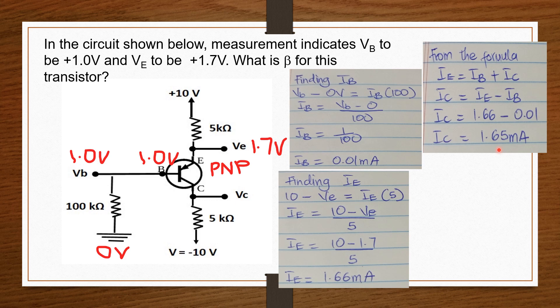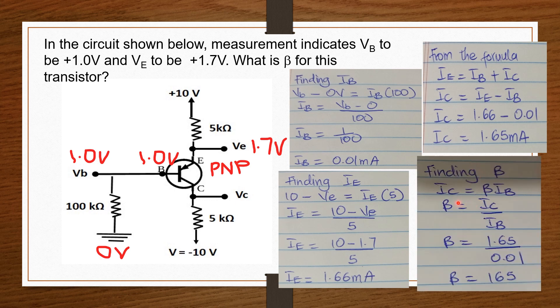We also have the formula IC equals beta times IB. Using that formula and knowing IC, we can find beta. So beta equals IC over IB. Inputting the values for IC and IB, we get beta equals 165.